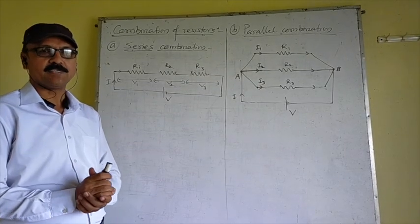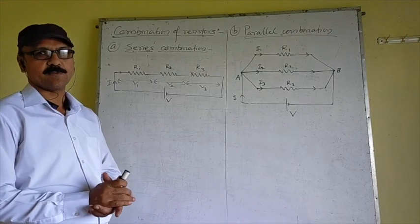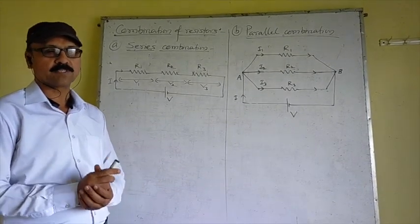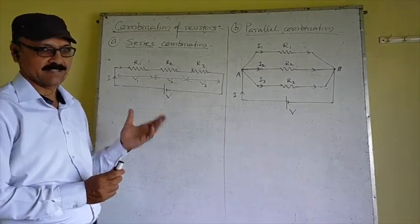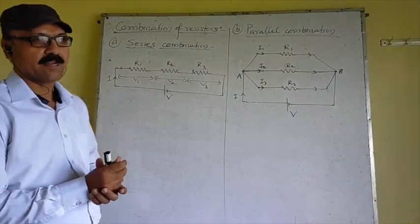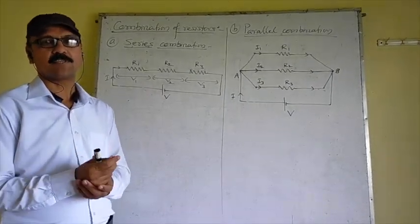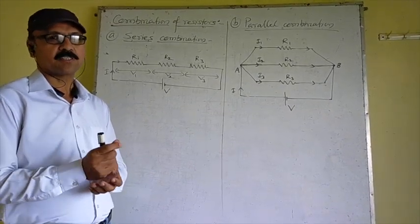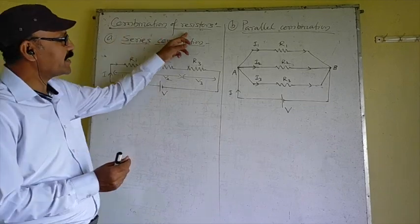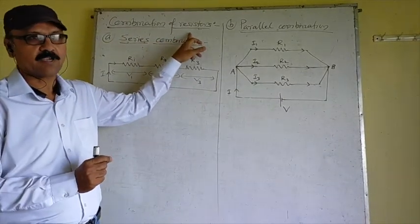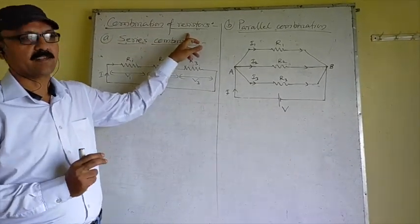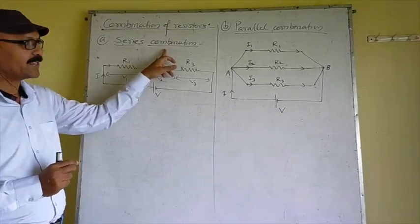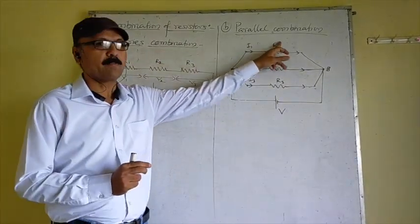Hello students. As we studied in the previous videos — Potential, Potential Difference, Ohm's Law, and Resistance — resistance is the opposition to the flow of current in a conductor. Now we are going to study here the combination of resistances. There are two types: the first one is the Series Combination, and the second one is the Parallel Combination.